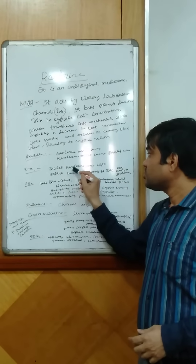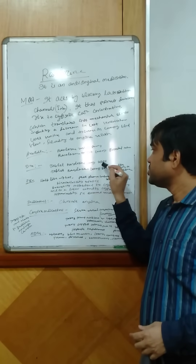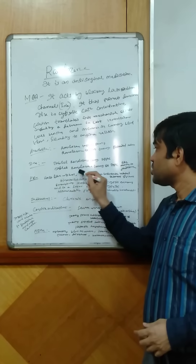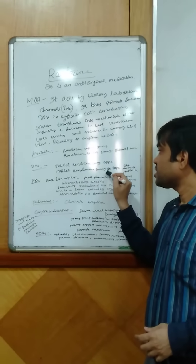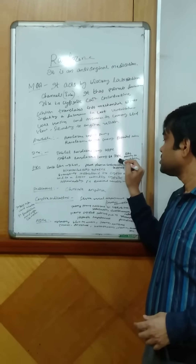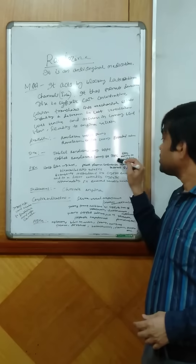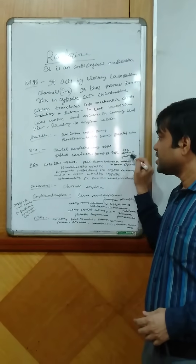Coming to the dose: Tablet Ranolazine 500 mg twice daily, and Tablet Ranolazine 1000 mg extended release twice daily, according to the guideline.